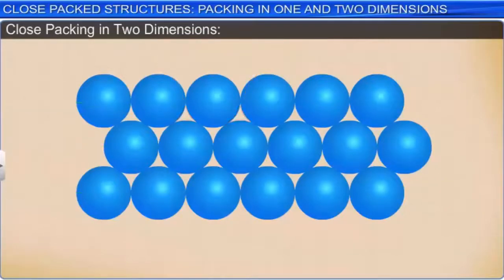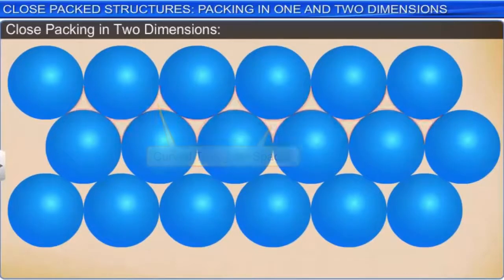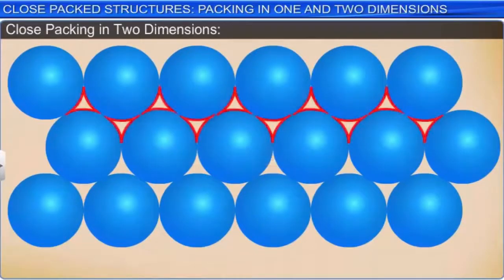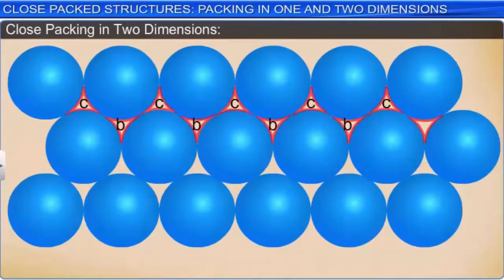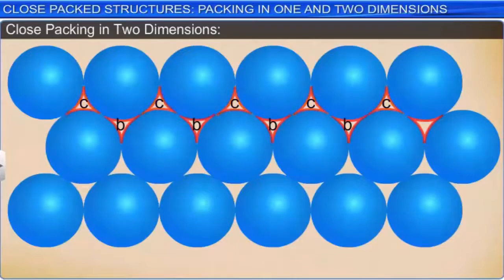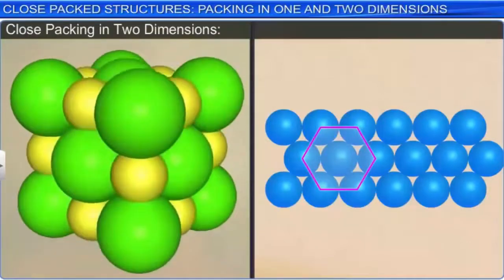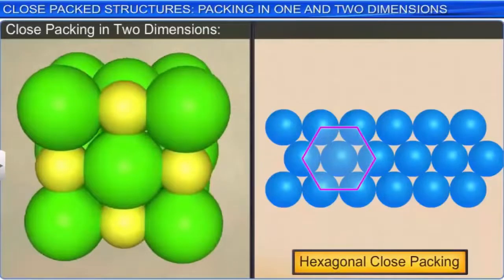In the figure, the empty spaces appear as curved triangular spaces. These spaces can be divided into two kinds: spaces marked B, where the apex of the triangular space points downwards, and spaces marked C, where the apex points upwards. As real crystals are three-dimensional in nature, this two-dimensional hexagonal close packing will be used to build three-dimensional structures.